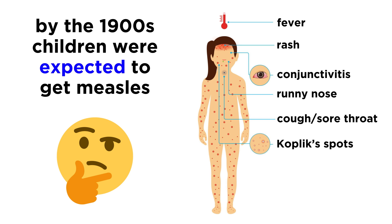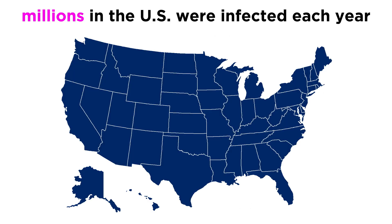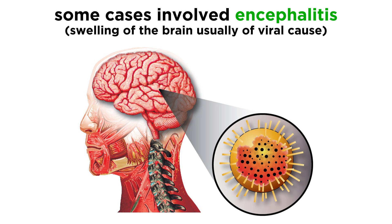By the arrival of the 1900s, it was expected for nearly all children to get measles by the time they were fifteen years old, and those cases usually involved rash, high fever, cough, inflammation of the nasal passage, or conjunctivitis. Millions of people in the United States were infected with measles each year, some of whom required hospitalization, and a smaller number suffered encephalitis as a complication — a word which refers to a swelling of the brain.